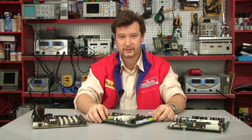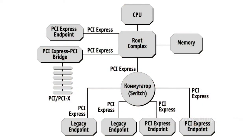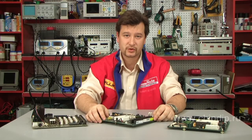PCI Bus operates at 33 or 66 MHz frequency and provides bandwidth of 133 or 266 MB per second, all of which is shared by all PCI devices. PCI Express Bus operating frequency is 2.5 GHz, which ensures unidirectional bandwidth of 250 MB per second for each PCI Express line.